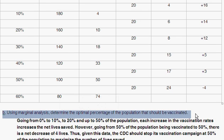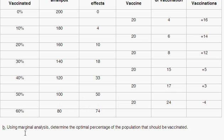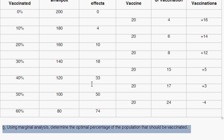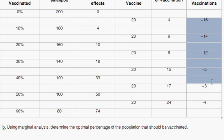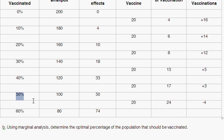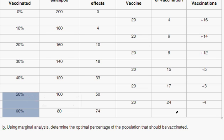Part B asks: using marginal analysis, determine the optimal percentage of the population that should be vaccinated. Going from 40% to 50%, you saved three lives — every step along the way, you've been saving lives, but fewer and fewer. Now at 50%, you consider whether to go to 60%. The data tells you four people will die because of it, so you stop. There's no reason to vaccinate the additional 10% because the marginal benefit of 20 is less than the marginal cost of 24. So the optimal vaccination rate is 50%.